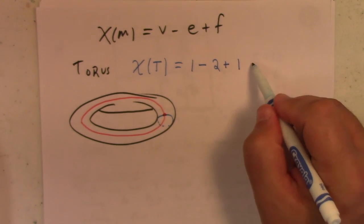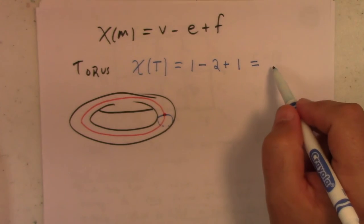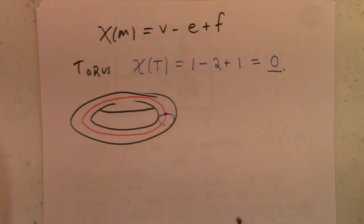So Euler characteristic of torus, zero. There's the proof.